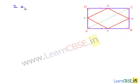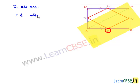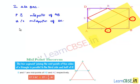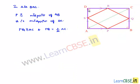Now in triangle BAC, P is the midpoint of AB and Q is the midpoint of BC. So by the midpoint theorem, we can say that PQ is parallel to AC and PQ is equal to half of AC. From triangle DAC we got SR equal to half AC, and here we got PQ equal to half AC, so we can say SR is equal to PQ.